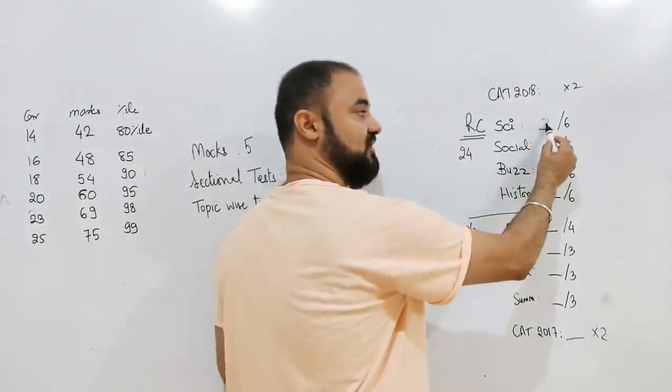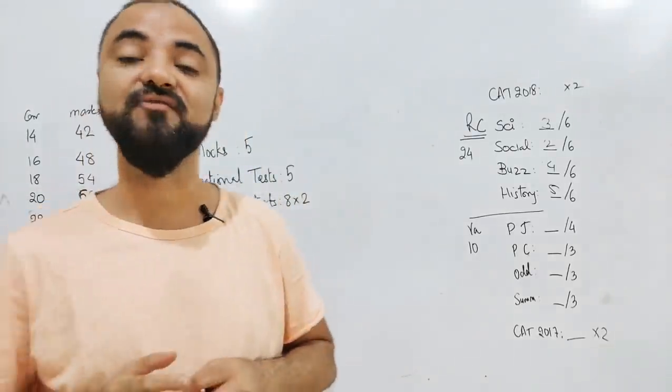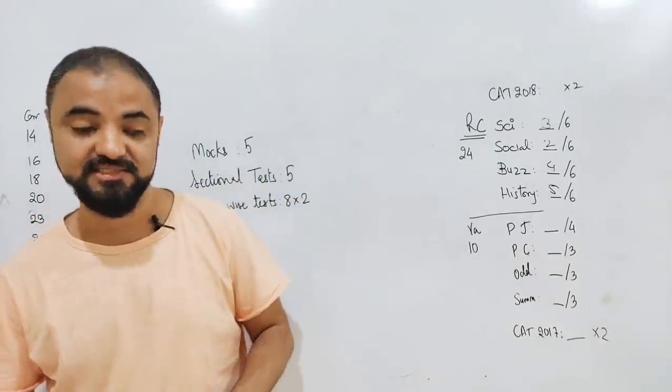For example, fill in the blanks, you need to find out whether you are scoring three right, two right, four right, five right out of them, so that I can easily find out what is my accuracy, what is my strength, what is my weakness.